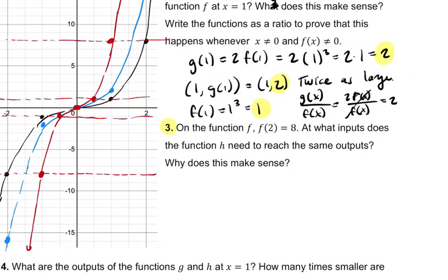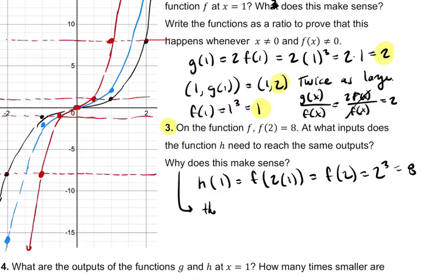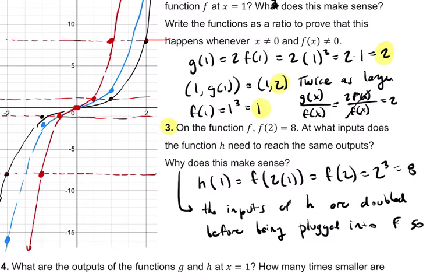Okay. On the function f, f of 2 equals 8. At what inputs does the function h need to reach the same outputs? Well, we already kind of showed that. But basically, if you take h of 1, that's the same thing as f of twice 1. So we double the inputs of h before plugging them into f, which is f of 2, which is 2 cubed or 8.